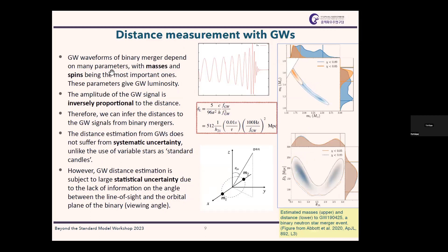How can we measure distances? Gravitational wave waveforms of binary mergers depend on many parameters — masses and spins being the most important. These parameters also give the gravitational wave luminosity. We measure the parameters purely from the waveforms, independent of distance. Then we measure the amplitude; if the amplitude is small despite large masses, the system is far away. That's how we measure distances.